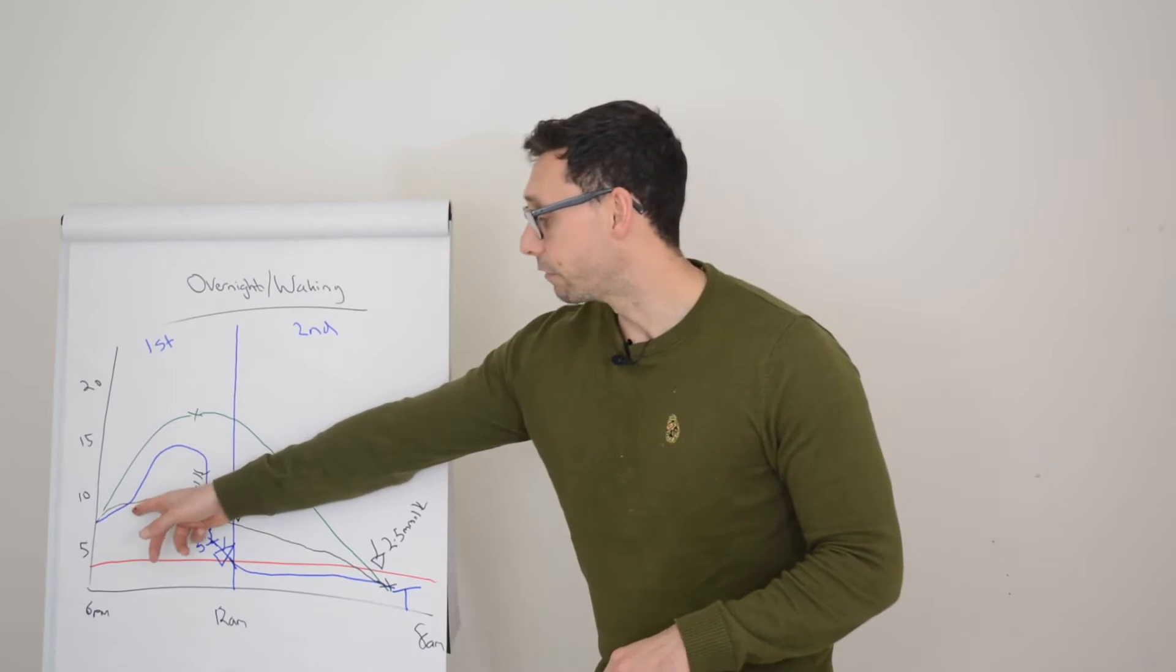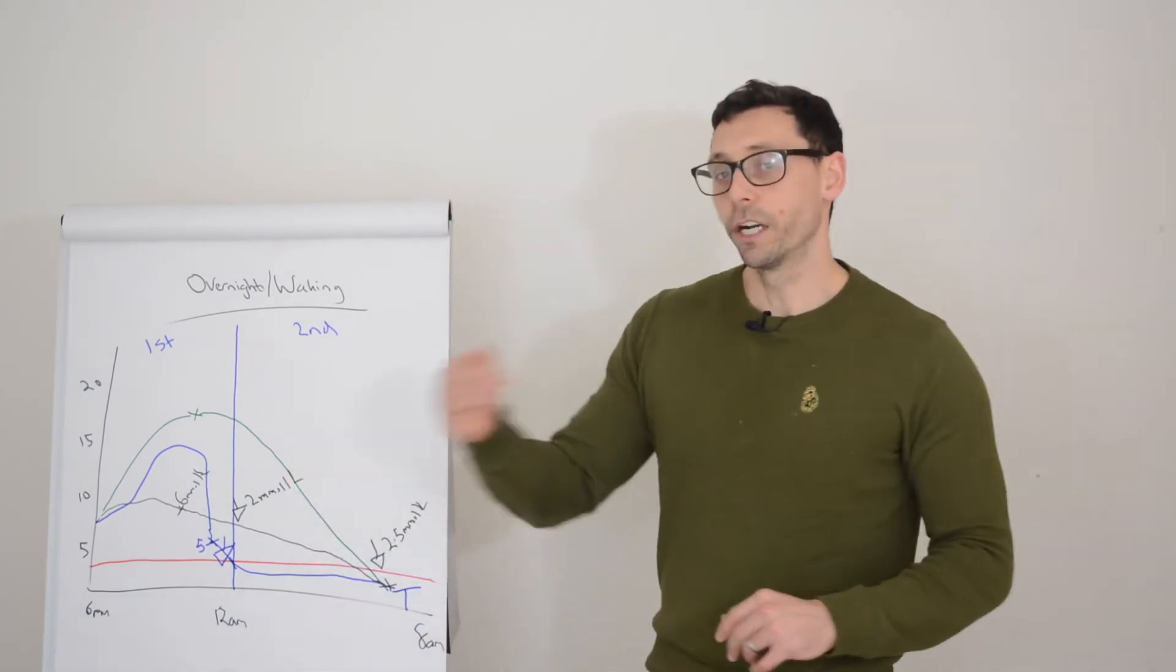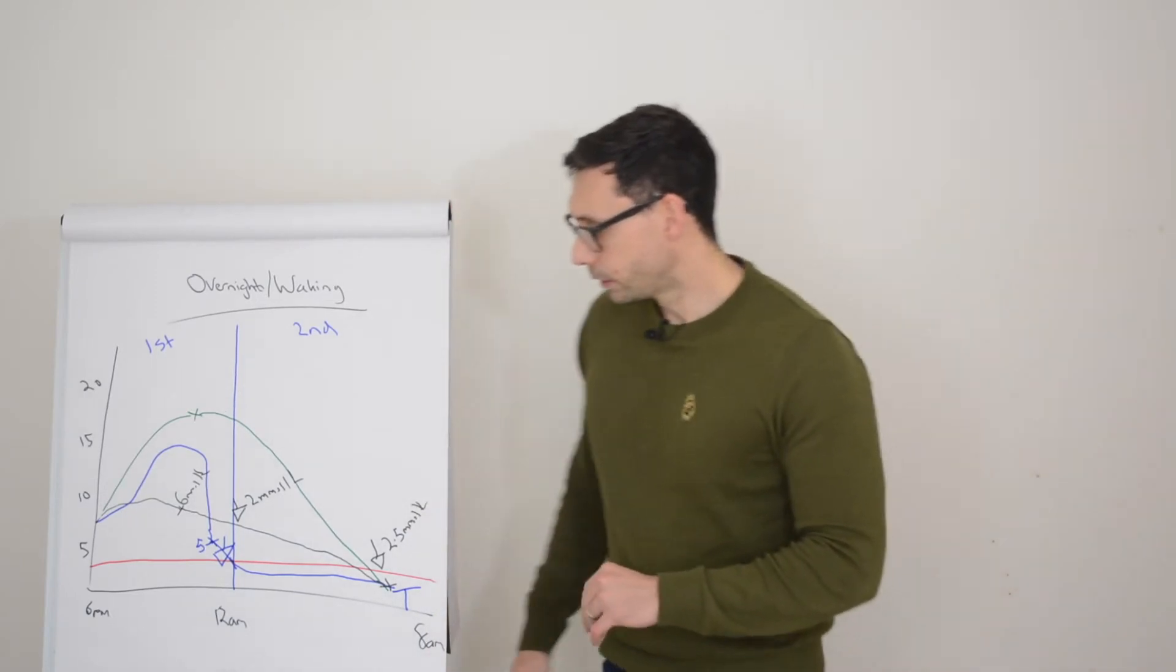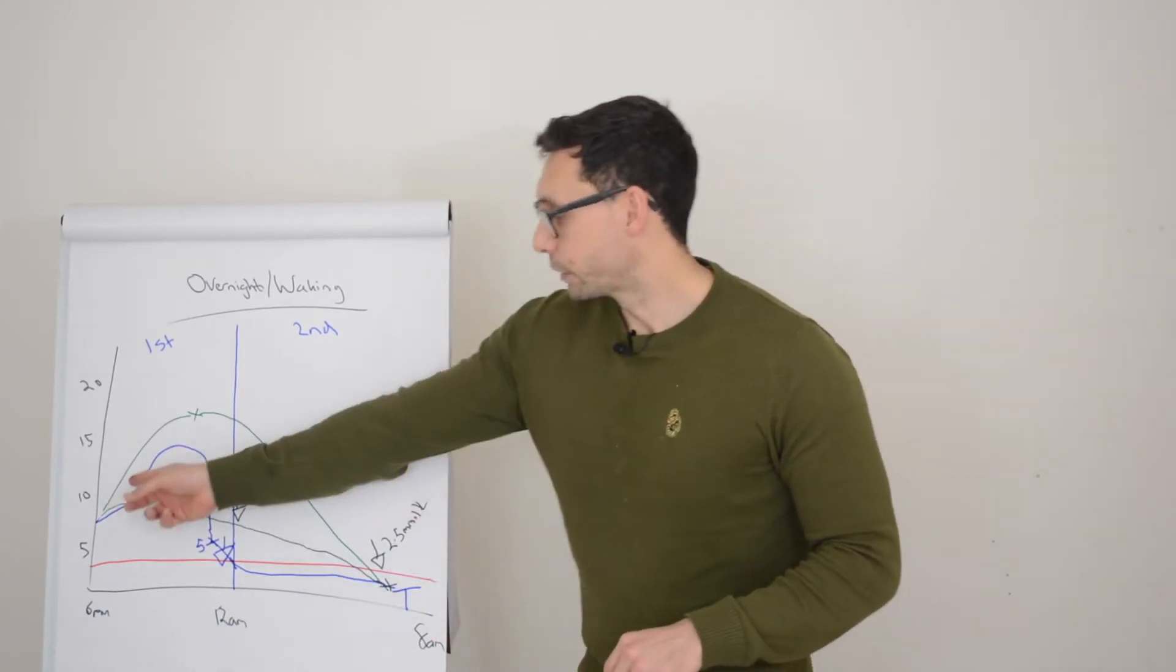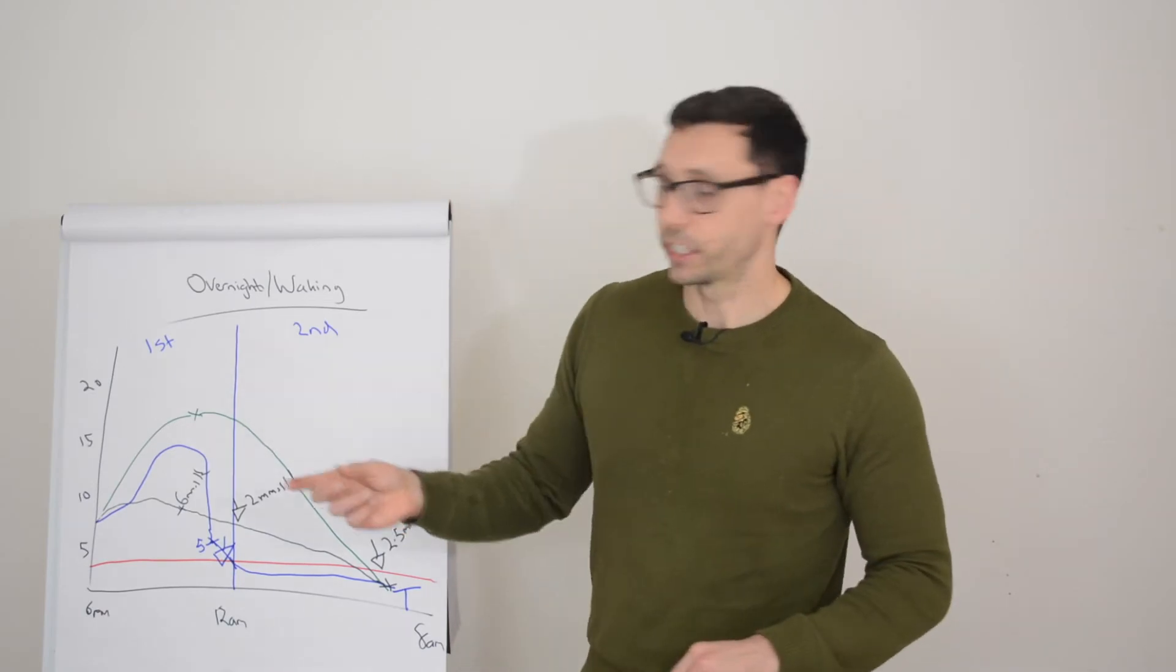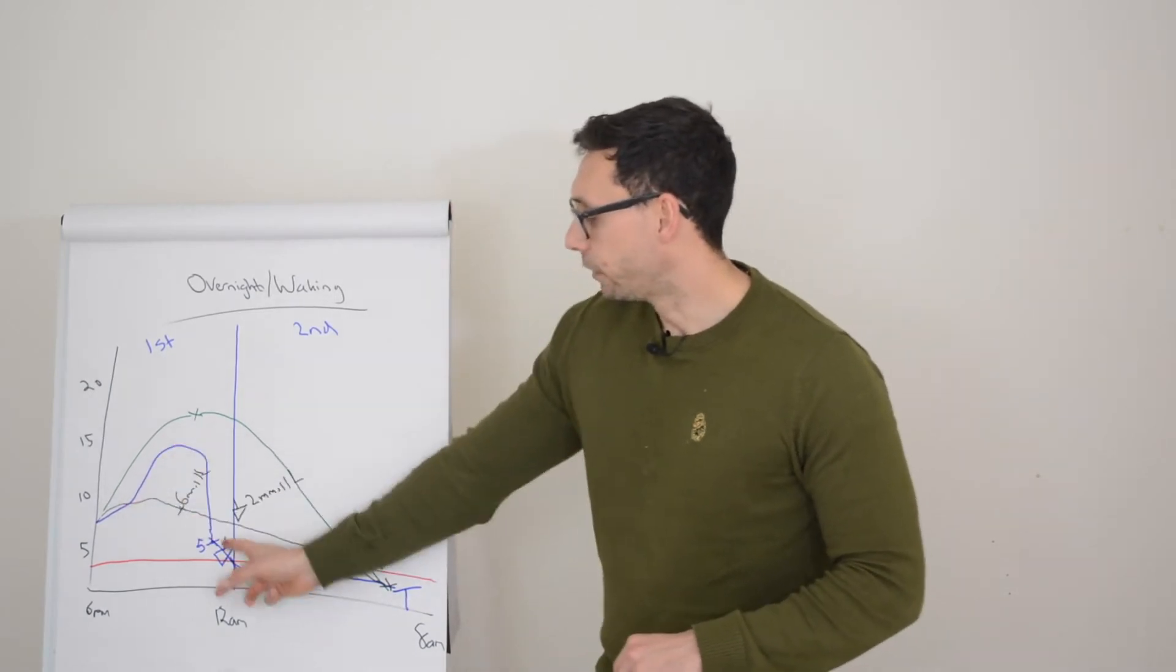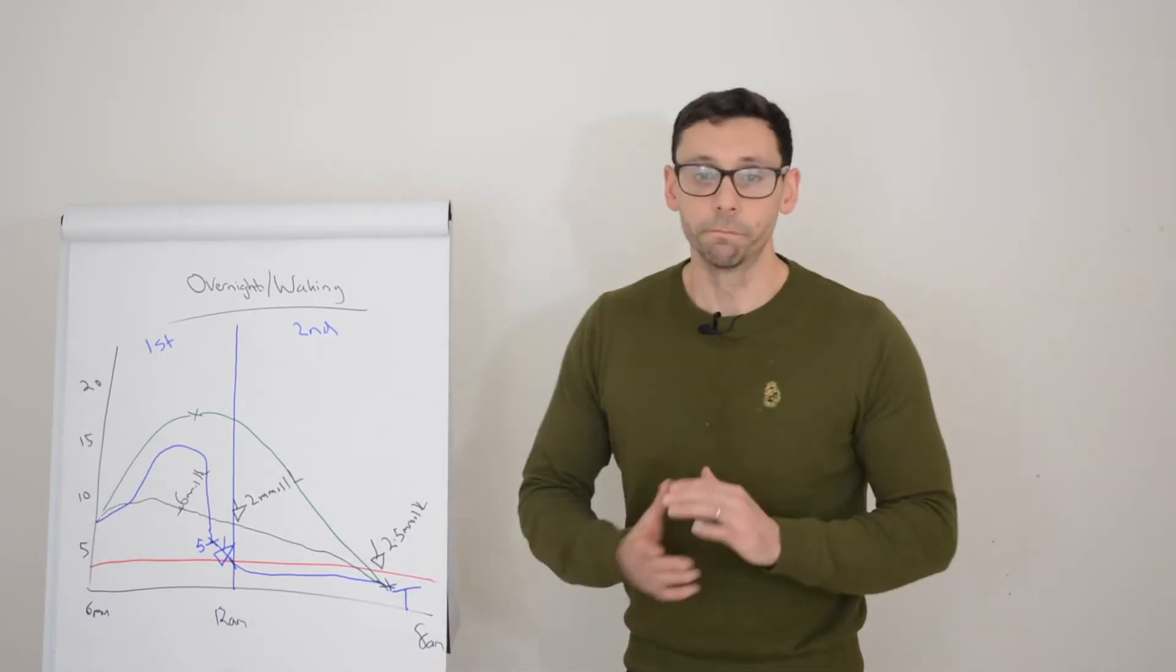Sometimes it's a combination - you might have the background insulin that pushes you down a little bit and you've also got that rapid insulin driving you low. So three causes: running too tightly where even modest drops become a problem, having too much background insulin where big drops will occur, and assessing what part of the evening or night the hypo is actually occurring.